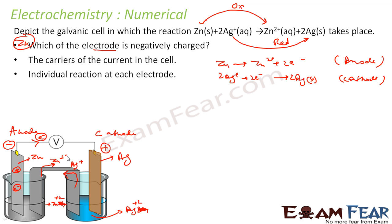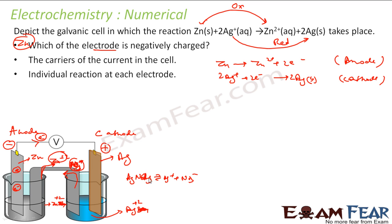AgNO3 dissociates into Ag+ and NO3−. The Ag+ ions are consumed at the cathode. Because more Zn2+ is produced on the left and Ag+ is used up on the right, NO3− ions will move from right to left through the salt bridge to maintain charge balance. So inside the cell, ions are the current carriers; outside the cell, electrons are the current carriers.